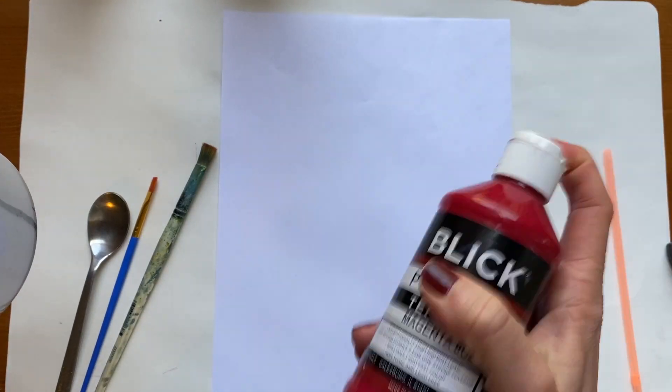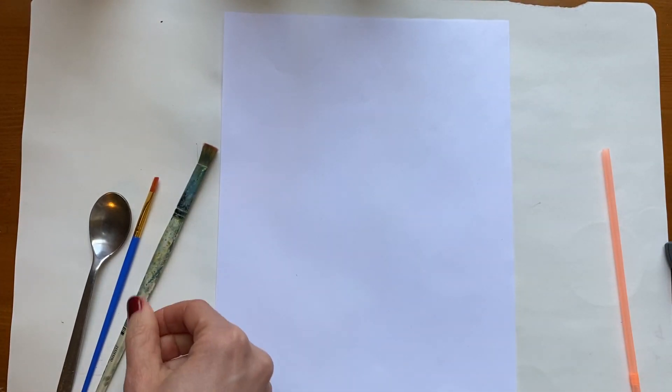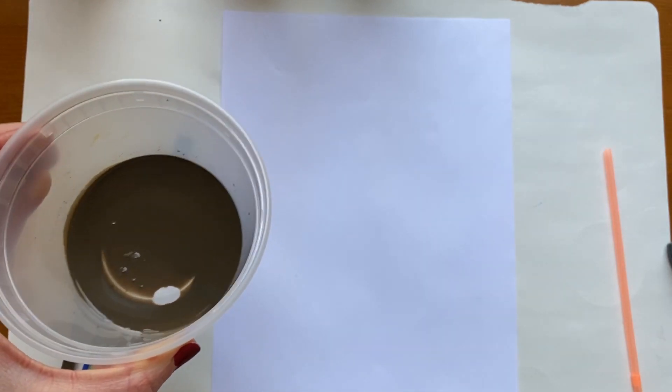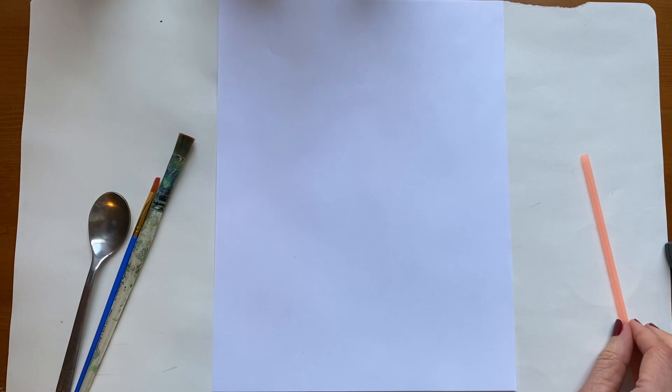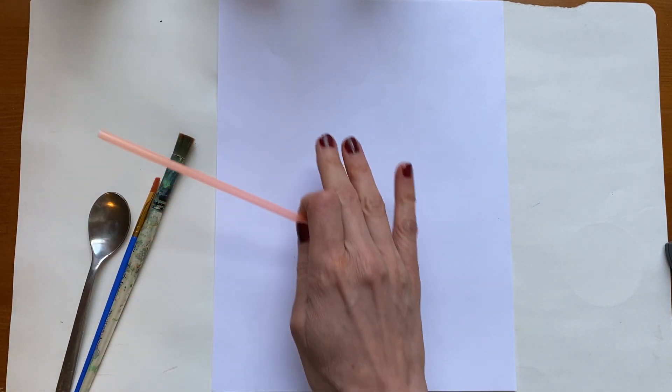If you have tempera paint it's a little bit more liquidy, but you're still gonna want to add a little bit more water. Now what you're gonna need to do is get a little bit of paint onto the paper, and then we're gonna use the straw to blow the paint so it spreads out like branches.